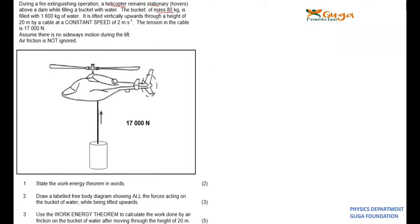A bucket of mass 80 kg filled with 1.6 kg of water is lifted vertically upward through a height of 20 meters by a cable at a constant speed of 2 meters per second. The tension in the cable at one point is 17,000 Newtons. Assume that there's no sideways motion during the lift, and friction is not ignored.